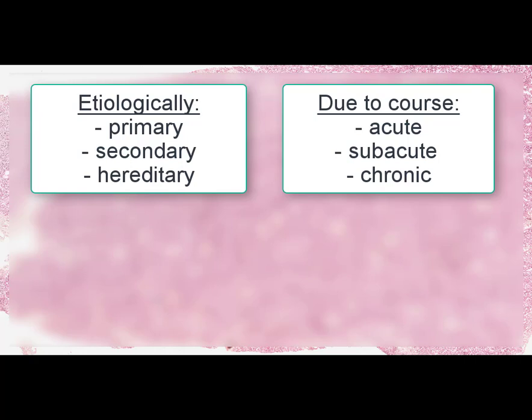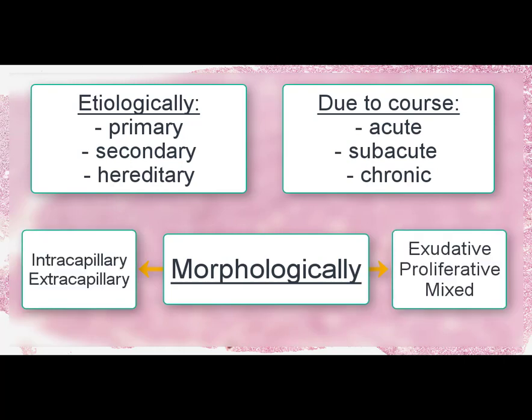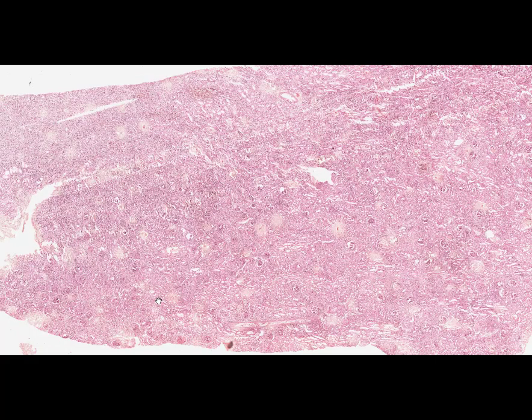According to etiology there are primary, secondary, and hereditary glomerulonephritis. According to course of disease: acute, subacute, and chronic. According to morphological criteria it can be divided into intracapillary and extracapillary, as well as exudative, proliferative, and mixed. The extracapillary proliferative glomerulonephritis with crescents is a subacute rapidly progressive glomerulonephritis, usually accompanied by nephrotic syndrome.